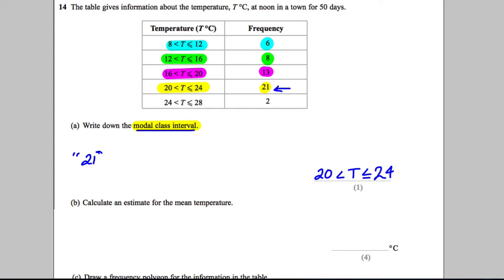Calculate an estimate for the mean temperature. The reason it's an estimate is because all these temperatures are in groups so we can't be sure what the individual temperatures were. So what we do in this case is we take the midpoint of this group.